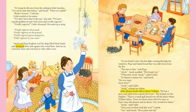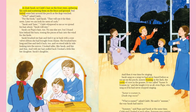We ate Sarah's stew, the late light coming through the windows. Papa had baked bread that was still warm from the fire. "The stew is fine," said Papa. "Oh yeah," Sarah nodded. "The bread too." "What does 'oh yeah' mean?" asked Caleb. "In Maine it means yes," said Sarah. "Do you want more stew?" "Oh yeah," said Caleb. "Oh yeah," echoed my father. After dinner, Sarah told us about William. He has a gray and white boat named Kittiwake — that is a small gull found way off shore where William fishes. At dusk, Sarah cut Caleb's hair on the front steps, gathering his curls and scattering them on the fence and ground.